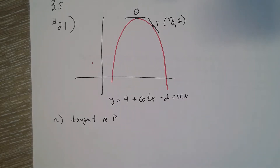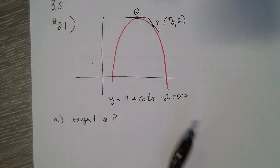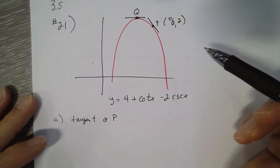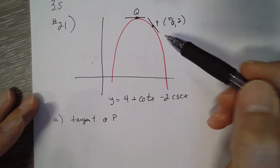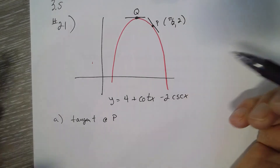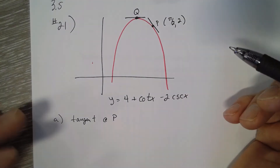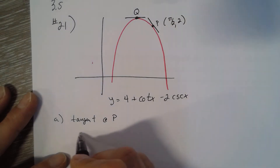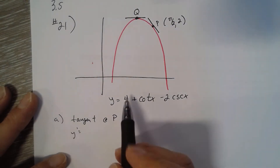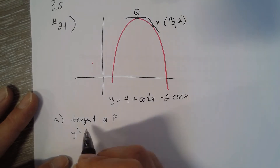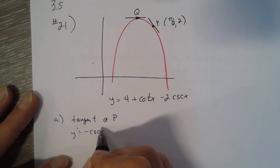Problem 3.5 number 21 has two parts. Part A: we want to find the tangent line at point P. We just have to find the derivative, plug in π/2, and use y = mx + b. It sounds easy enough, except the derivative of cotangent is negative cosecant squared.